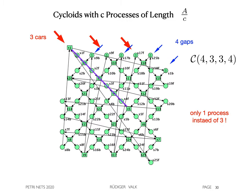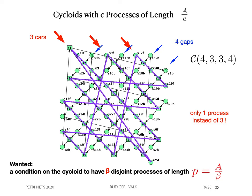In general, cycloids do not have this property of beta-separate processes. Look at this example 4334. We have only one process instead of three. What we want is a condition on the cycloid to have beta disjoint processes of length P capital A divided by beta.